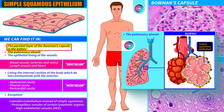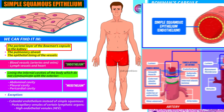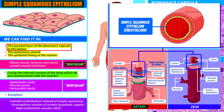We also have simple squamous epithelium covering the vessels of the circulatory system on the inside, and covering the internal cavities that do not communicate with the outside. But in these two places it has a particular name. The epithelial lining of the blood and lymph vessels and the heart is specifically called endothelium. Here we see an artery and a vein — observe how the inside is lined with a single layer of flat cells, called endothelium.